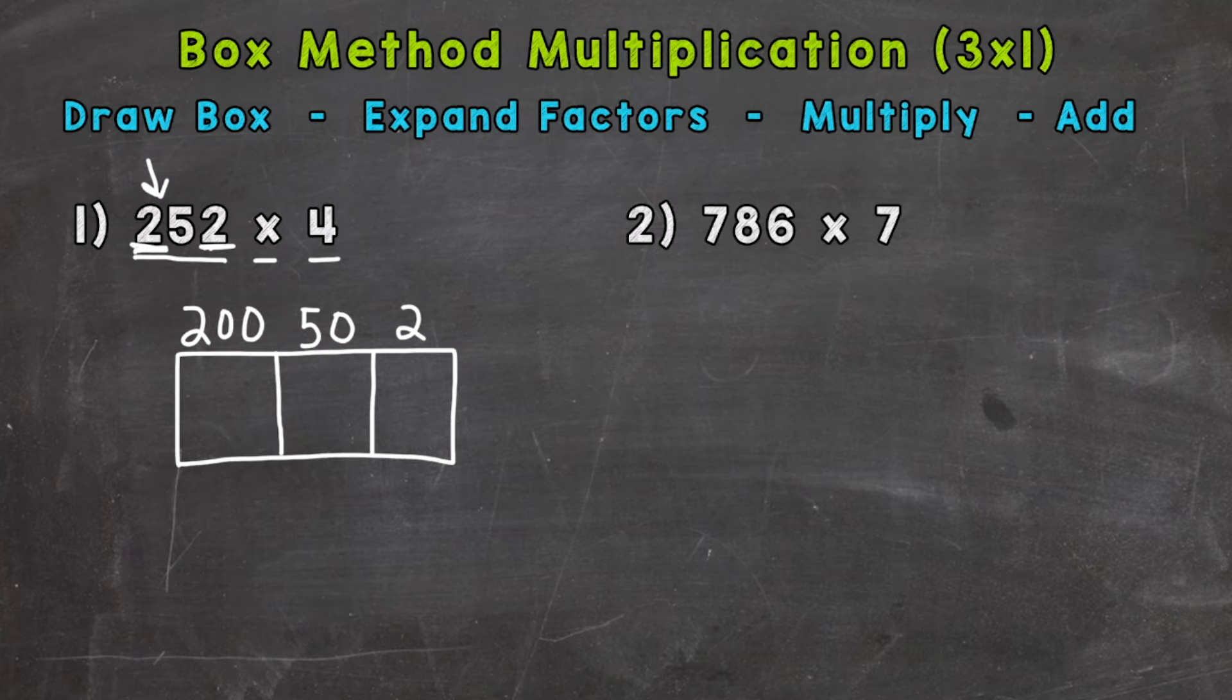So that's expanding out to show the value of each digit. And then our second factor is 4 here, which has a value of 4. So just to recap, we did 252 along the top, and then our second factor 4, which is right here, we put along the side.